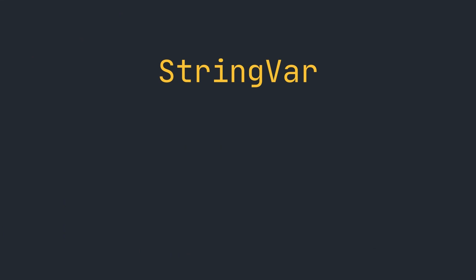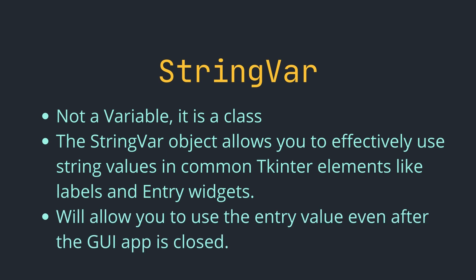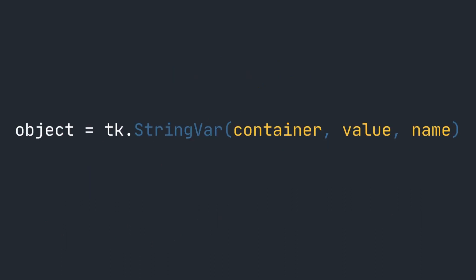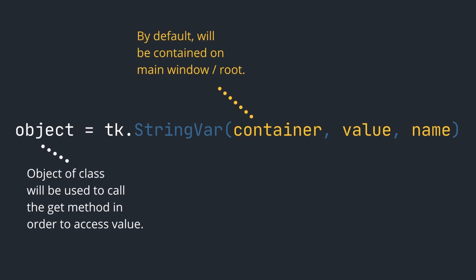Now we finally get to the solution: StringVar. StringVar is not a variable — it's a class, so you treat it as such. A StringVar object will allow you to effectively use string values in common tkinter elements like labels and entry widgets. Most importantly, it allows you to use the entry value even after the GUI app is closed, so you can store the value and use it in your Python program.